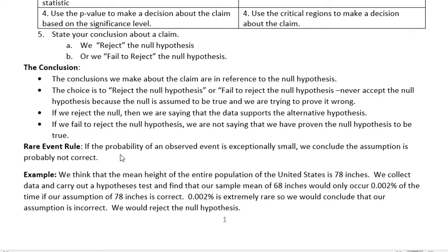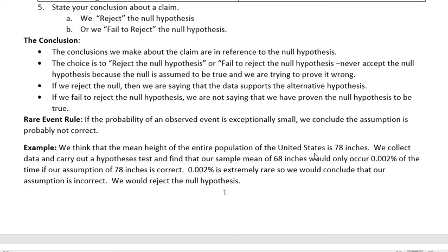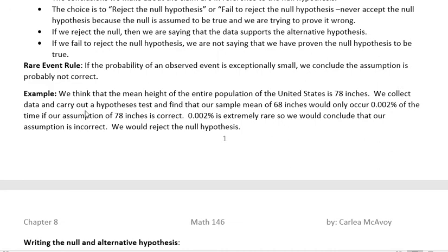Remember the rare event rule — we've talked about it before. If the probability of an observed event is exceptionally small, we conclude the assumption is probably not correct. For example, we think that the mean height of the entire population of the United States is 78 inches. We collect data and carry out a hypothesis test and find that our sample mean of 68 inches would only occur 0.002% of the time if our assumption of 78 inches is correct.